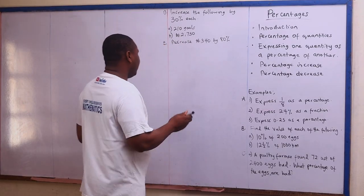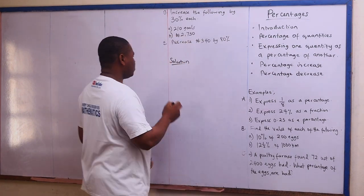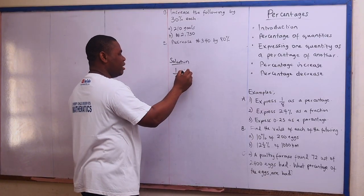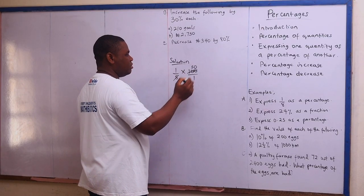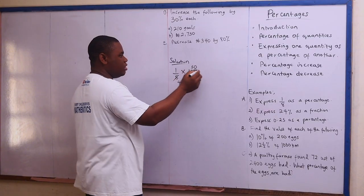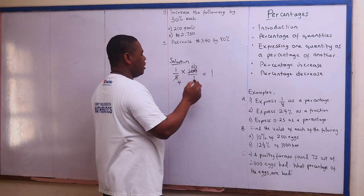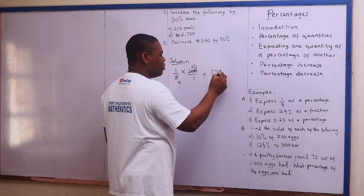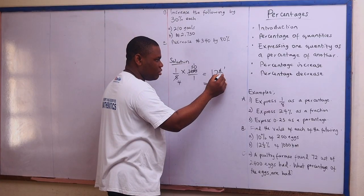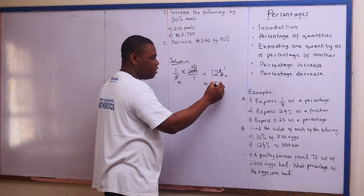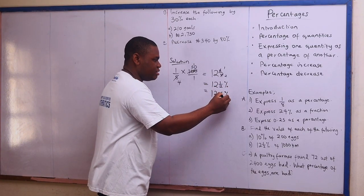For the first example, we have to express one over eight as a percentage. So we have one over eight, and I'm going to multiply it by 100 over one. Simplifying: two goes into 100 fifty times, two goes into eight four times, giving us 25 over two, which is 12 and one half percent, or 12.5 percent, since one over two is the same as 0.5.